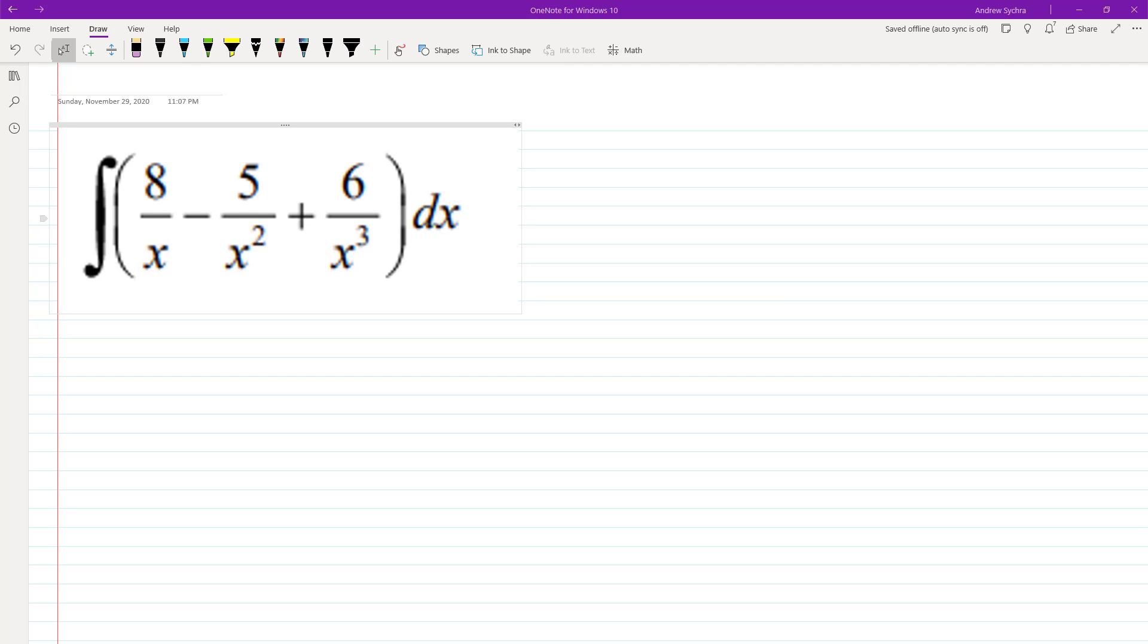All right, so let's go ahead and integrate the following integral. It's probably better to rewrite this in negative exponents, so 8x raised to negative 1, just write it like this, minus 5x raised to negative 2, plus 6x raised to negative 3.